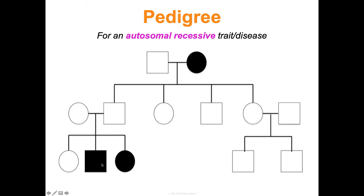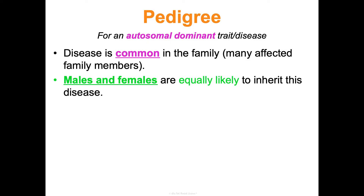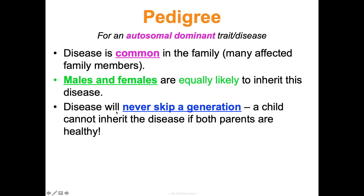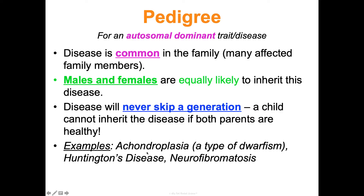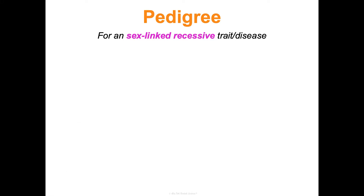In an autosomal recessive pedigree, two normal parents can have affected children if both are heterozygous carriers. Autosomal dominant traits, by contrast, are common in the family — if you've got it, you show it. Males and females are equally likely to be affected, and the disease never skips a generation. A child cannot inherit an autosomal dominant disease if both parents are unaffected. Achondroplasia, Huntington's disease, and neurofibromatosis are all autosomal dominant.